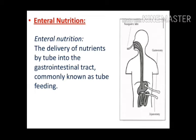That is gastrostomy. Then jejunostomy — this is the small intestine part. Our small intestine has duodenum, jejunum, and ileum. The middle part is jejunum — a direct opening into it. This is a small tube that we see in the abdomen. These are the main three routes used for enteral feeding.